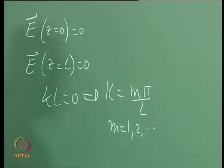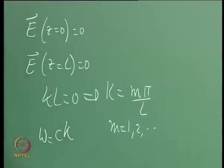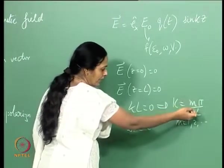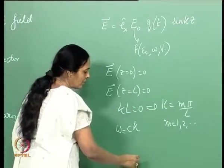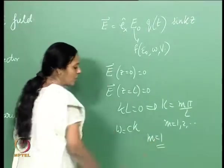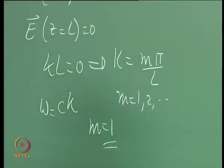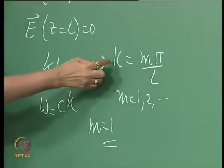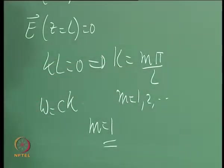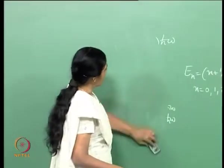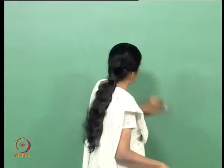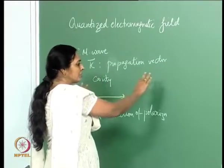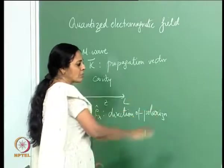The frequency omega is related to k through the standard relation ω = ck, which means that ω is now cπ/L or 2cπ/L and so on. For simplicity we choose m = 1. This can be done without loss of generality because I am considering an electromagnetic wave of frequency ω = πc/L. This is a single-mode field propagating along the z axis, chosen for simplicity.